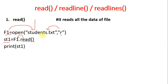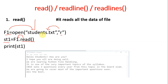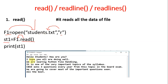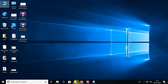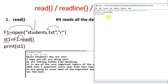The file connected to f1 is students.txt. The data inside students.txt is: 'Hello students how are you, I hope you all are doing well,' and so on. The read function is going to read all this data, store it in the identifier st1, and then we print it with print(st1).